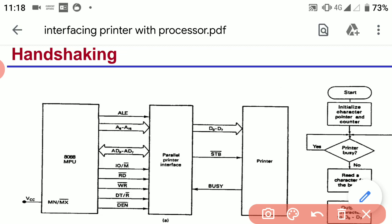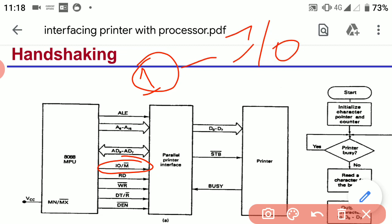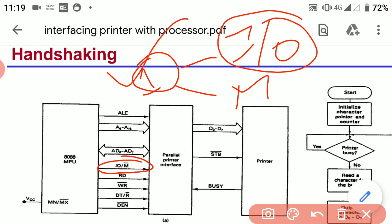If the IO/M pin is at high state, then any input/output device can be connected with the microprocessor. If this pin is at low state, then memory can be connected with the microprocessor. Here we are using a connection of a printer with the 8086 processor, so this pin will be at high state because the printer is an input/output device.